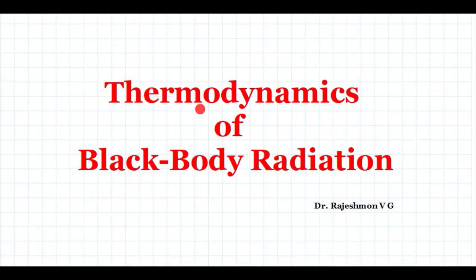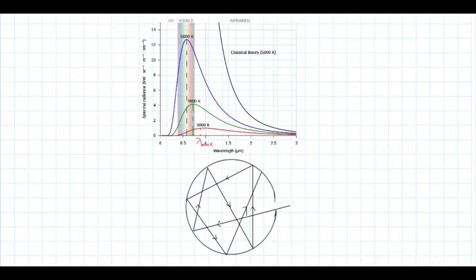In this lecture, I will explain the thermodynamics of blackbody radiation. One of the most important applications of Bose-Einstein statistics is to investigate the equilibrium properties of blackbody radiation. A blackbody can be defined as the one which absorbs all the radiation which is incident upon it — none is reflected.